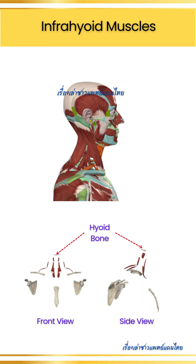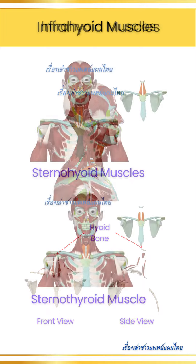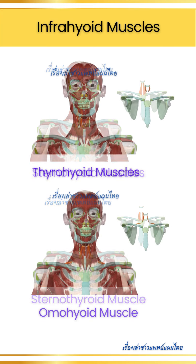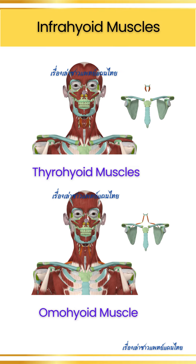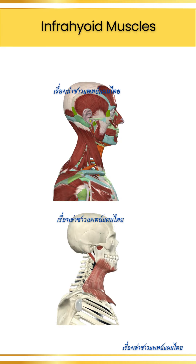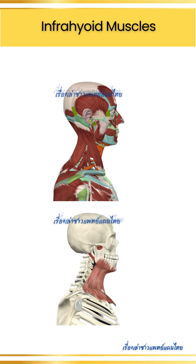Infrahyoid muscles, located below the hyoid bone, include the sternohyoid, sternothyroid, thyrohyoid, and omohyoid muscles. These muscles depress the hyoid bone and are involved in movements necessary for swallowing and stabilizing the neck.